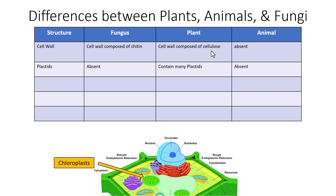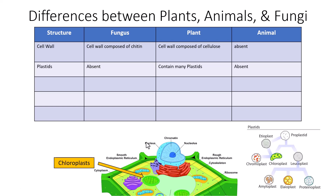In addition to the cell wall difference, there is a difference in plastids. Plants are the only eukaryotic cells that contain plastids. The most well-known plastid is the chloroplast, found only in plant cells, which allows them to photosynthesize — making glucose from light and carbon dioxide. In fungi and animals, plastids are absent. Other plant plastids include chromoplasts and leucoplasts.